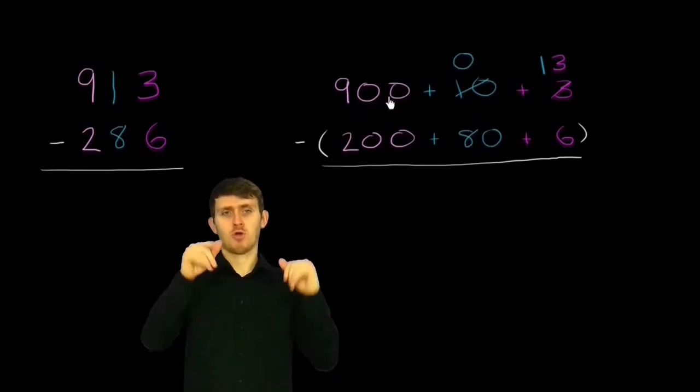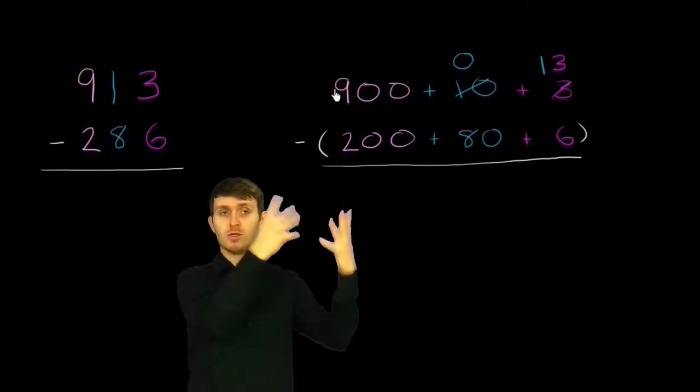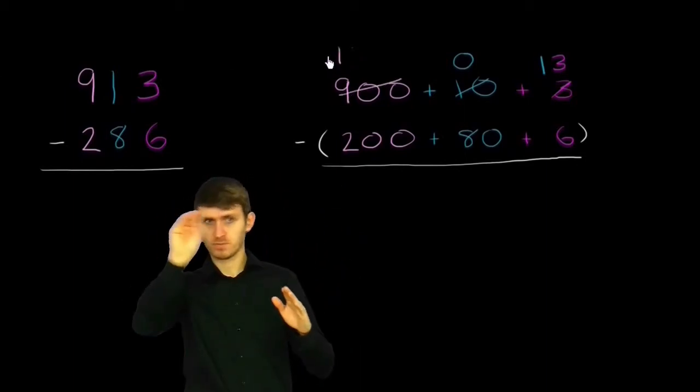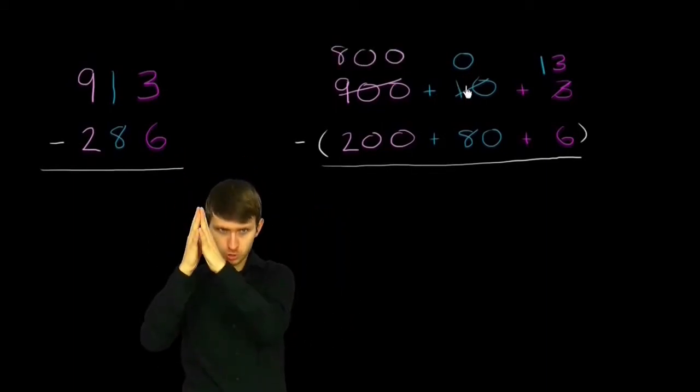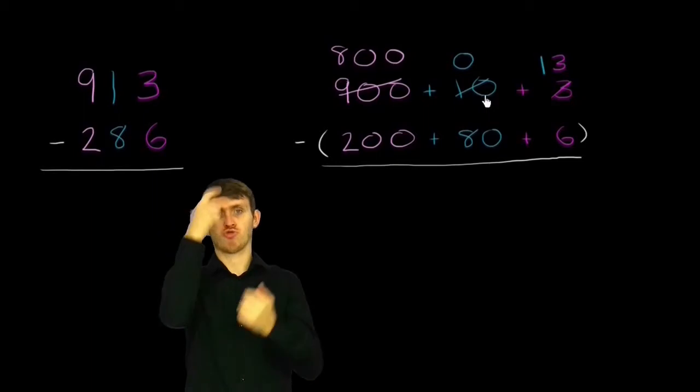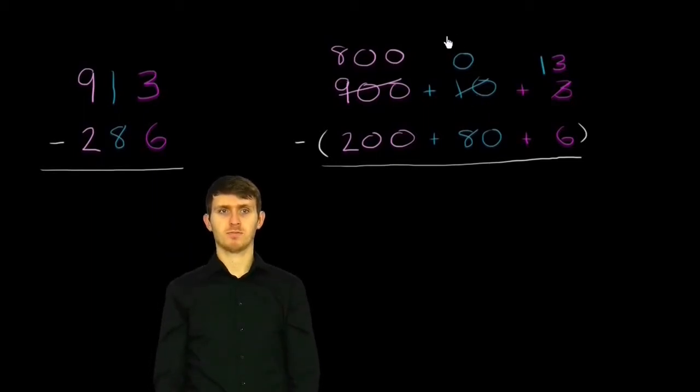Well, luckily, I can go to the hundreds place. I could take 100 from 900, so then I'm left with 800. And I could give it to the tens place. So if I give it to the tens place, then this is going to be 100. So then this is going to be 100 right over here.